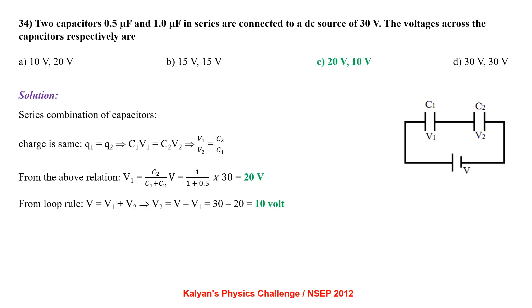Two capacitors 0.5 μF and 1.0 μF in series are connected to a DC source of 30V. For series combination Q₁ = Q₂, so C₁V₁ = C₂V₂, giving V₁/V₂ = C₂/C₁. Thus V₁ = [C₂/(C₁+C₂)]×V = 20V. Applying loop theorem V = V₁ + V₂, V₂ = 30 − 20 = 10V.